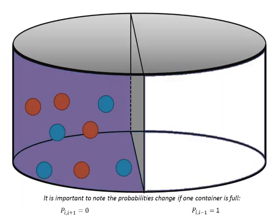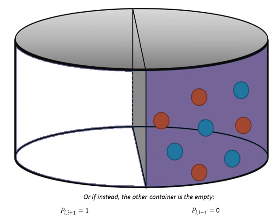It is important to note the probabilities change if one container is full: P(i, i+1) is 0, whereas P(i, i-1) equals 1. Or, if instead the other container is empty, the probabilities are P(i, i+1) is 1, and P(i, i-1) is 0.